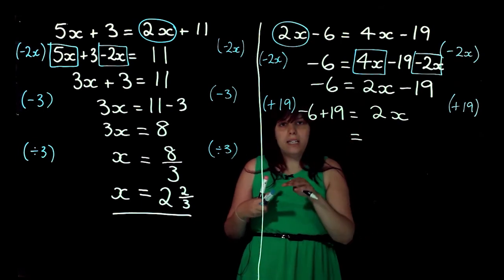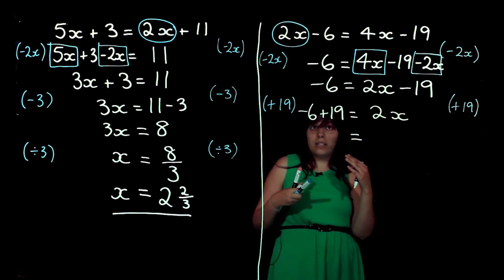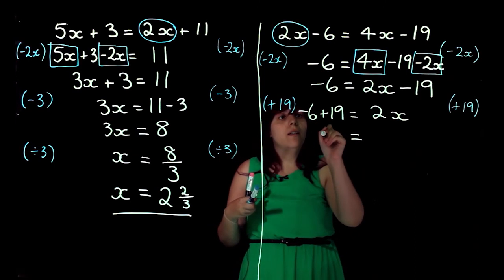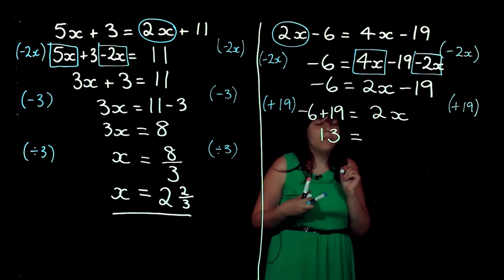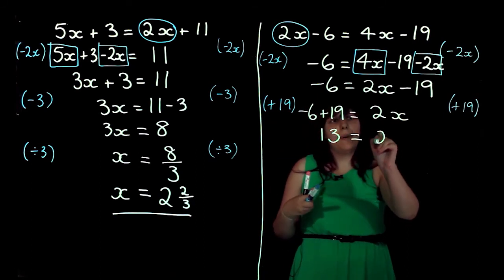Now, minus 6 plus 19 is going to be 13. And then, I've got 2x on this side.